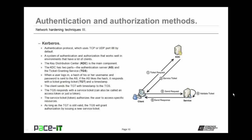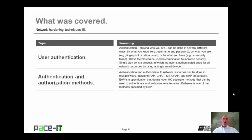As long as the TGT is still valid, the TGS will grant additional authorization by issuing a new service ticket as required for as long as the TGT and its timestamp are still valid. That concludes this session on Network Hardening Techniques Part 3. I talked about user authentication, and then we concluded by talking about authentication and authorization methods. On behalf of Pace IT, thank you for watching this session.